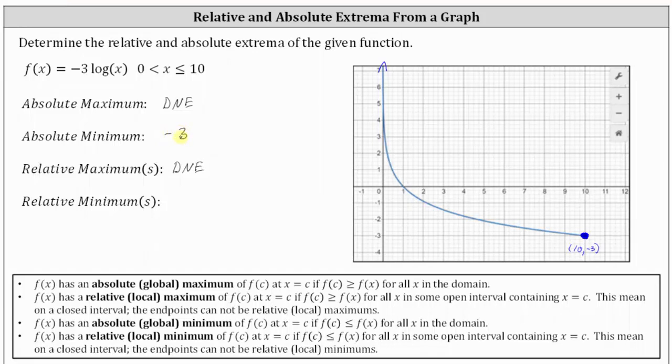And now we need to determine if this low point is also a relative minimum. Let's look at the definition of a relative minimum. f of x has a relative or local minimum of f of c at x equals c if f of c is less than or equal to f of x for all x in some open interval containing x equals c. So in order for f of c to be a relative minimum, x equals c must be in some open interval, which means we must be able to approach x equals c from the left and right in order for f of c to be a relative or local minimum.